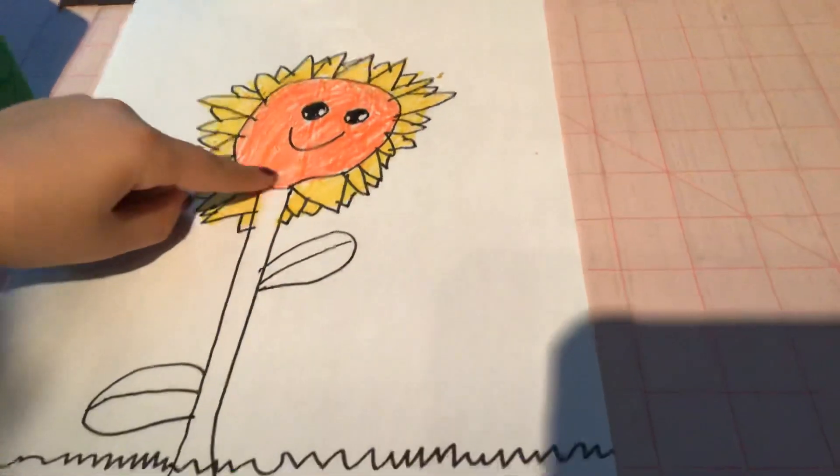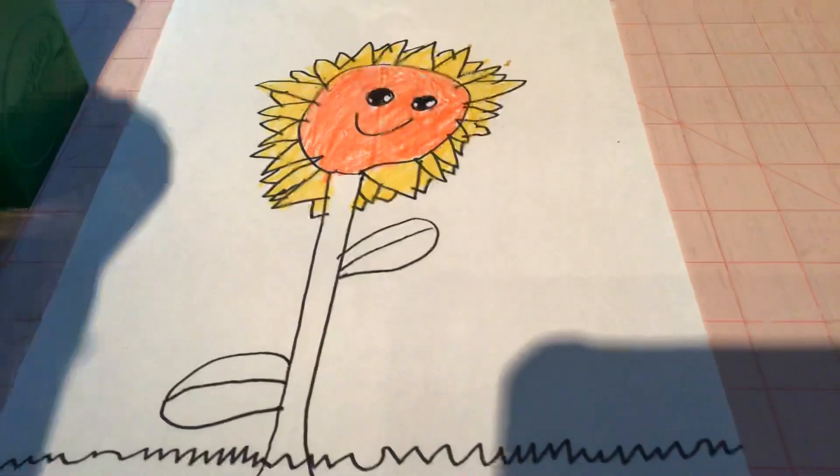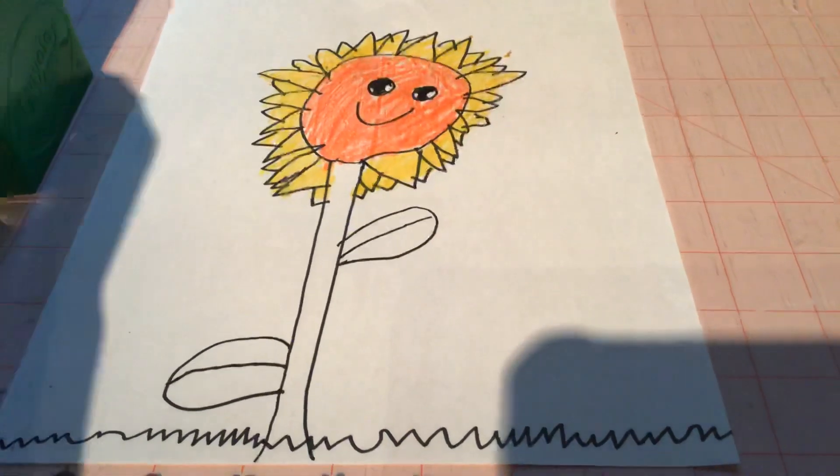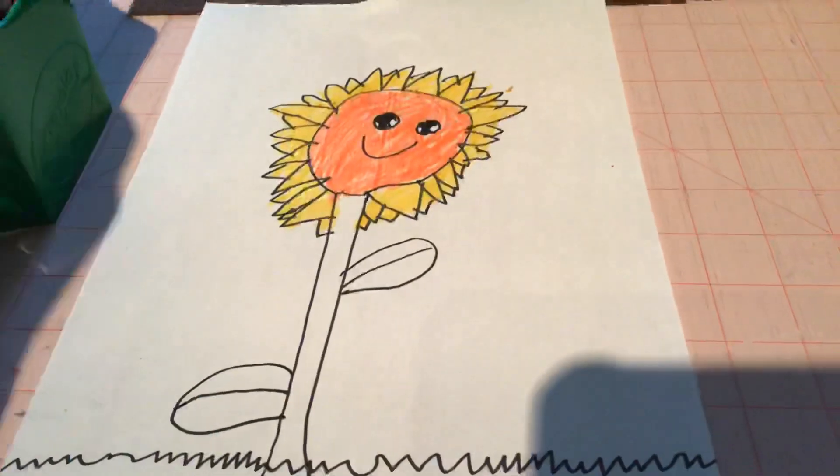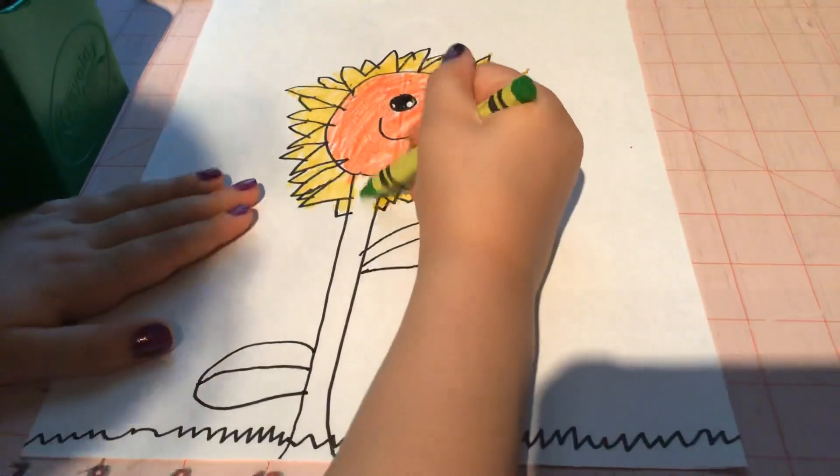Okay, we're done coloring the yellow. And now we want to color in the stem, so we're going to use like a green and color in the stem.